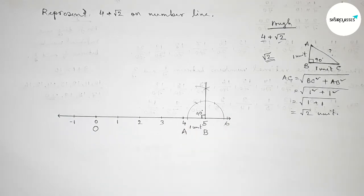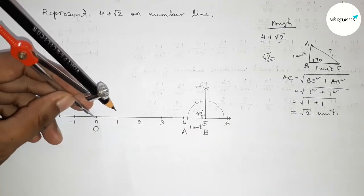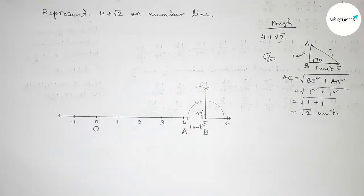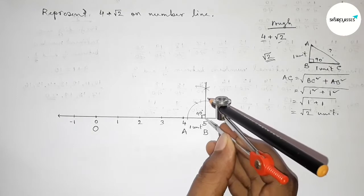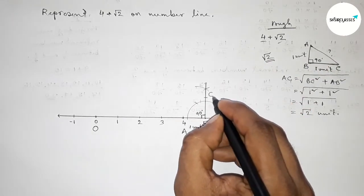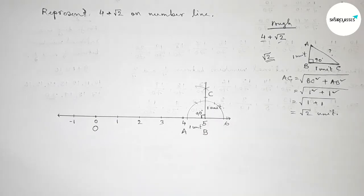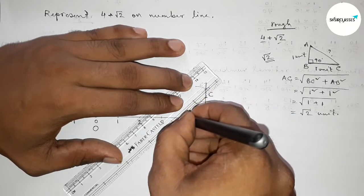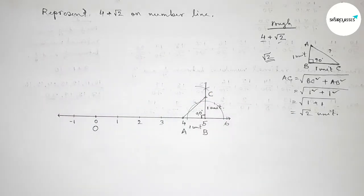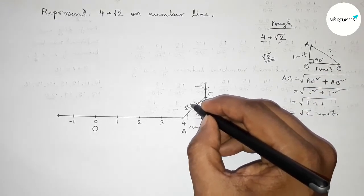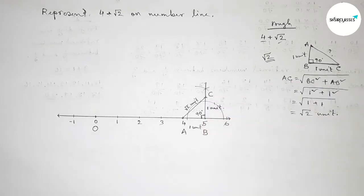Next taking 1 unit length, so between any two numbers the length is 1 unit. Now putting the compass on point B and cut here, so taking point C and this is 1 unit length. Now joining A and point C. From this concept we can say that this is obviously root 2 unit length.